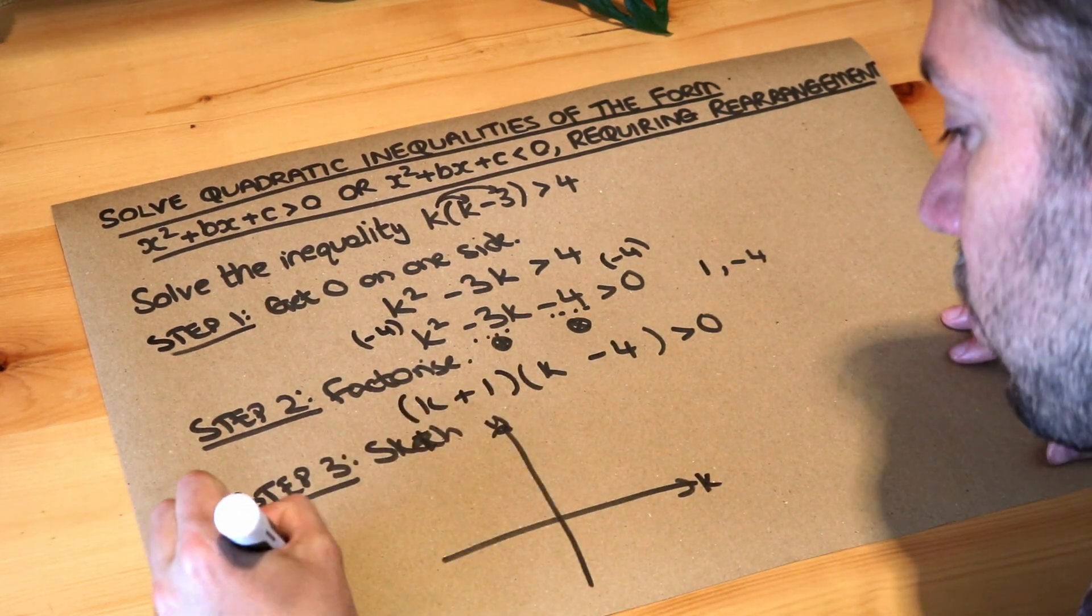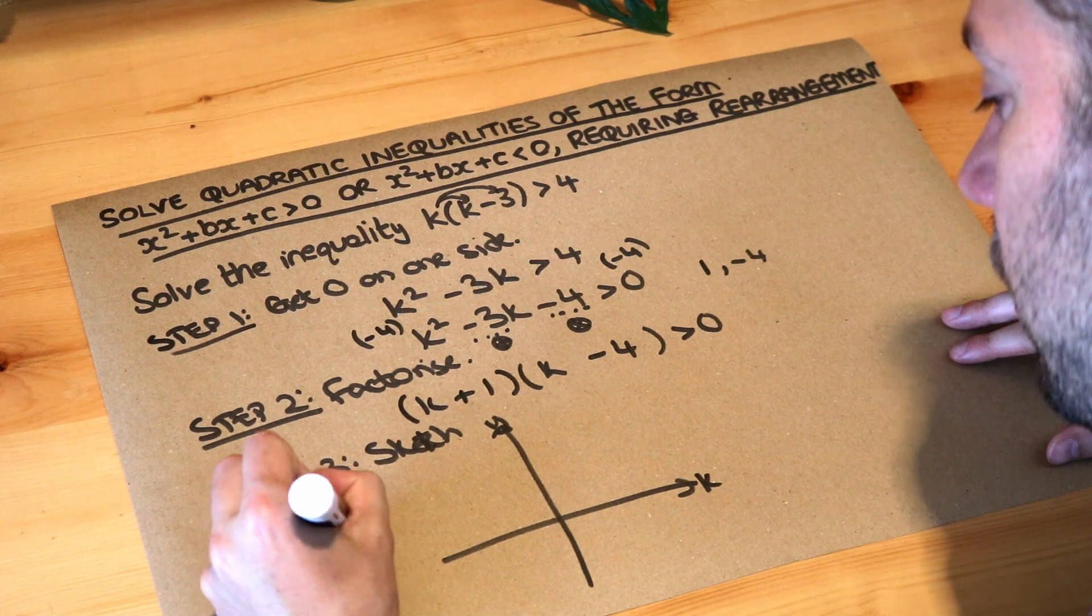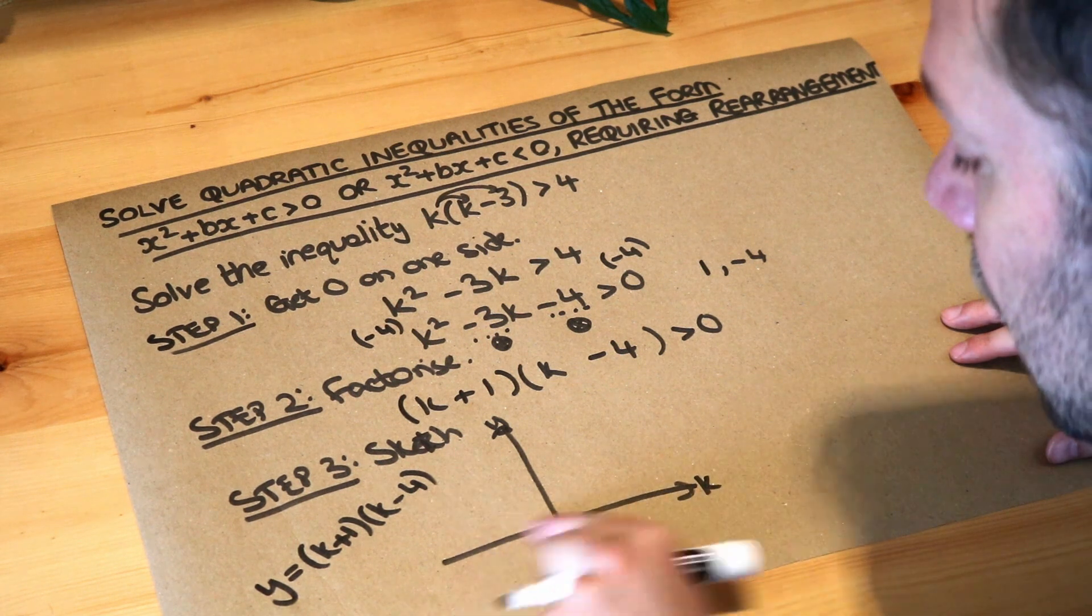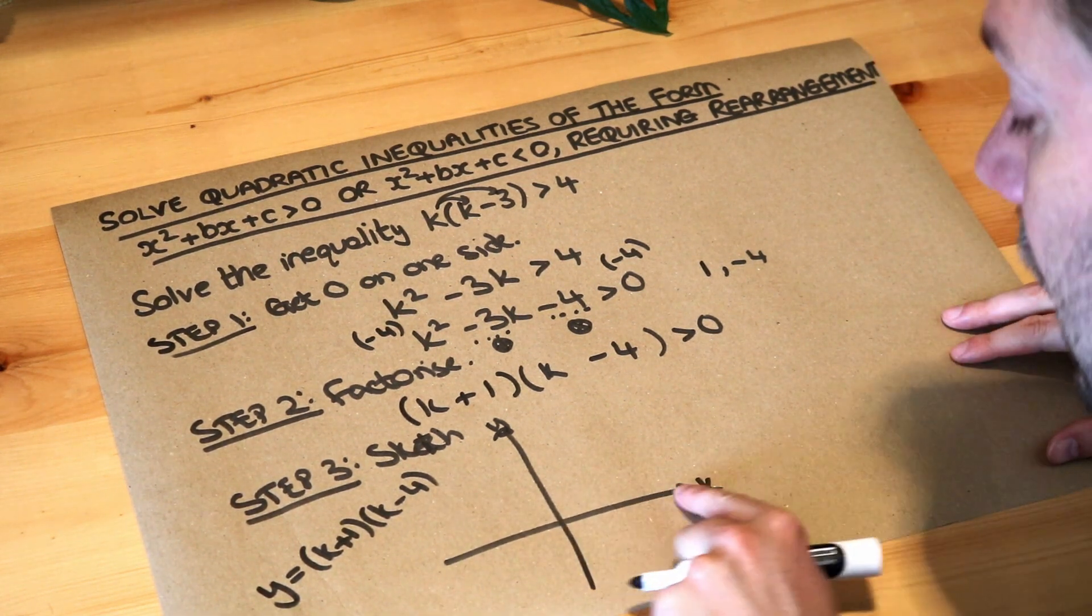Now how do we draw a quadratic? We're trying to draw y equals k plus one times k minus four. The way to do it is to find the roots, also known as the x-intercepts. In this case, the k-intercepts.